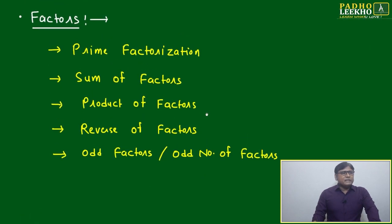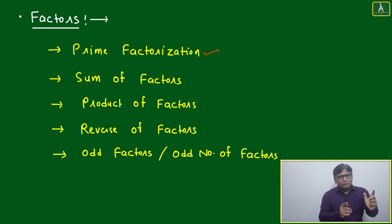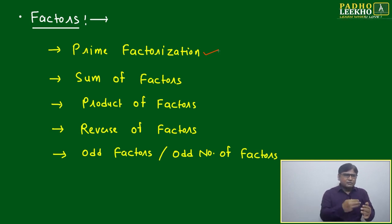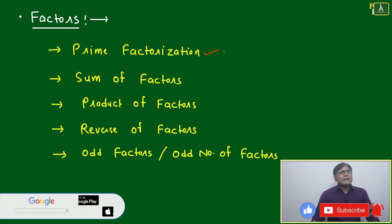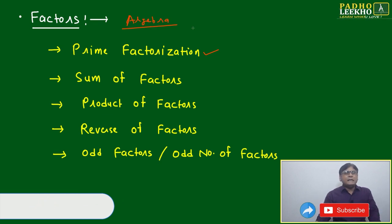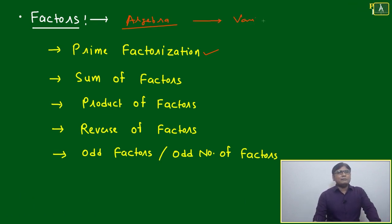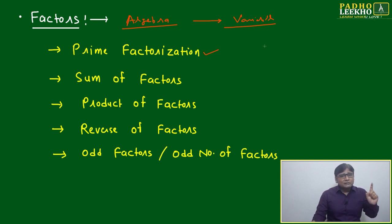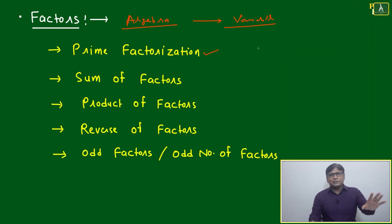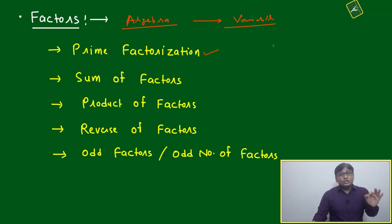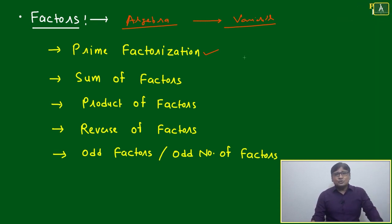After remainders, your major challenge will be related to factors. Prime factorization looks easy, but topics like number of factors, odd number of factors, odd factors, reverse of factors, sum of factors, and product of factors give a lot of scope for algebra questions. You will find plenty of variable-based questions that look like algebra, but if you are good in factors you will be able to solve them. I will show you today — many questions you can't imagine can be solved based on factors, and these are CAT questions, moderate to tough level.